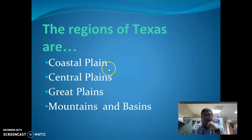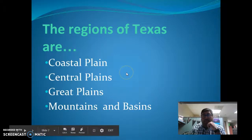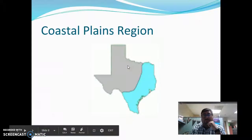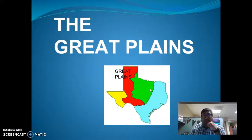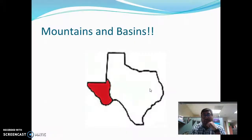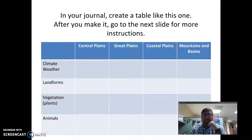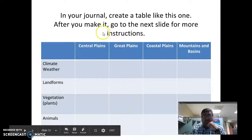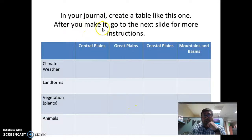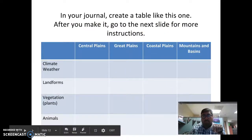If you can name the four regions, let's review. The four regions are: Coastal Plains, Central Plains, Great Plains, and Mountains and Basins. So you can remember the locations — here they are: Coastal Plains, Central Plains, Great Plains, and Mountains and Basins. In your journal, create a table like the one shown. Push pause, copy this table, and when you finish push play and continue the video.